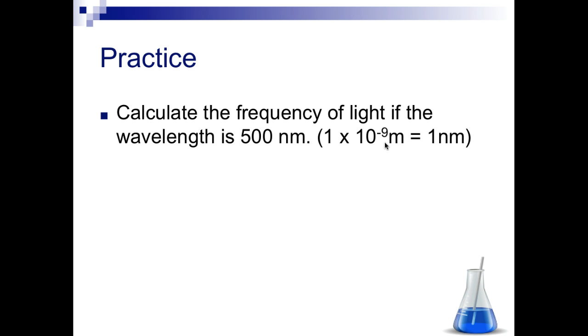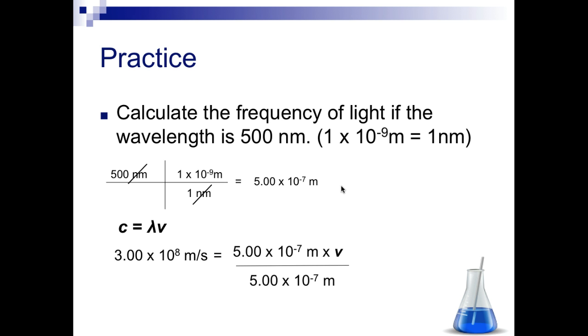Great, well what did you come up with? The first thing you should have done is converted your wavelength to meters. Because you cannot plug this directly into our equation, c equals lambda nu, we need this to be in meters first. So convert to meters, then plug into your equation. Divide each side by your wavelength, and you should have gotten 6.00 times 10 to the 14th hertz, which is the unit for frequency.